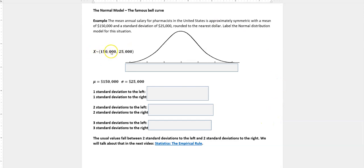So what this says is our mean is $150,000 and our standard deviation is $25,000. And of course we use mu for our mean and we use sigma for our standard deviation.